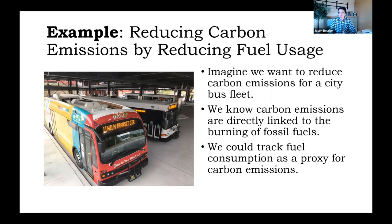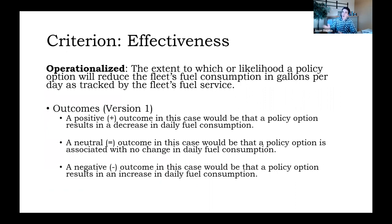To go back to our bus carbon emissions reduction example: we are trying to reduce fuel usage as a proxy for reducing carbon emissions across the bus fleet. I defined and identified effectiveness in this way — I operationalized it as the extent to which a policy will reduce the fleet's fuel consumption in gallons per day as tracked by our fuel service. I set out positive, neutral, and negative conditions in this version of effectiveness. There are multiple versions; this is the simplest.